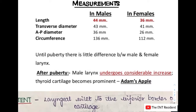The length is about 44 mm in males and 36 mm in females. The transverse diameter is about 43 mm in males and 41 mm in females. The anterior-posterior diameter is 36 mm in males and 26 mm in females. And even circumferentially, males have about 136 mm and females have 112 mm.